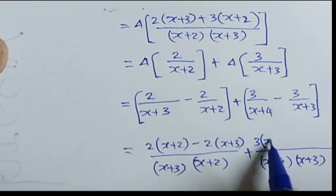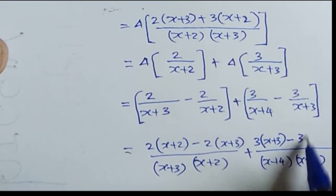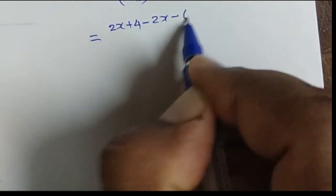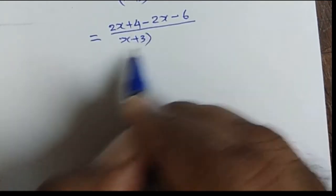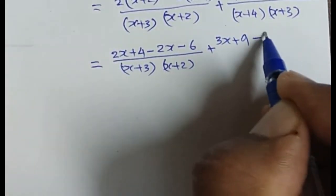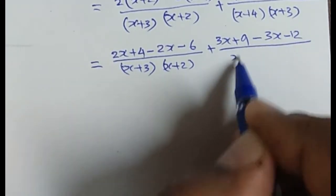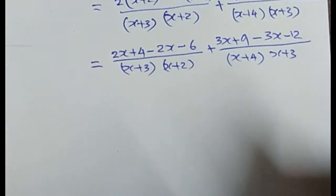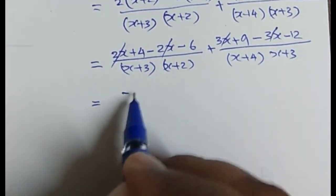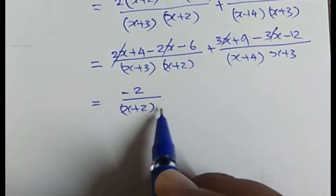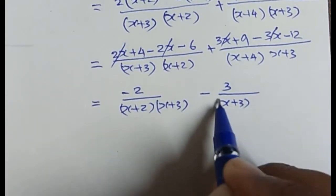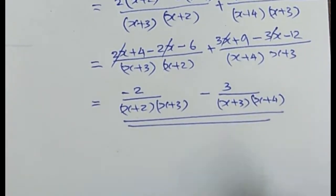At the numerators we have 3(x + 3) minus 3(x + 4) for the second term. Expanding and simplifying: the x terms cancel, leaving minus 2 divided by (x + 2)(x + 3) minus 3 divided by (x + 3)(x + 4), which is the required answer.